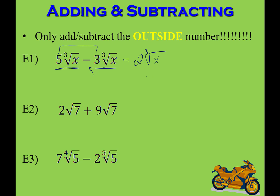On the next one, I have the square root of 7 and the square root of 7. Adding the outsides: 2 of something plus 9 of something gives 11 of that something, so 11 square roots of 7. On the last one, there's nothing you can do — I have a fourth root and a cubed root. Even if the radicands are the same, if the indexes differ you cannot combine them. So that one is already simplified.